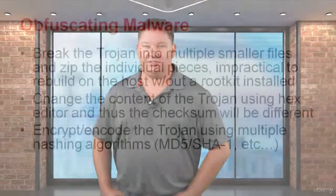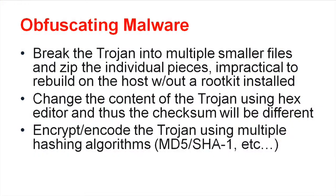Obfuscating malware: you want to break the Trojan into multiple smaller files and zip the individual pieces. It's impractical to rebuild on the host without a rootkit installed. If you're going to obfuscate malware, you want to break it up into multiple smaller files, because that changes the signature that the signature analyzers are looking for.